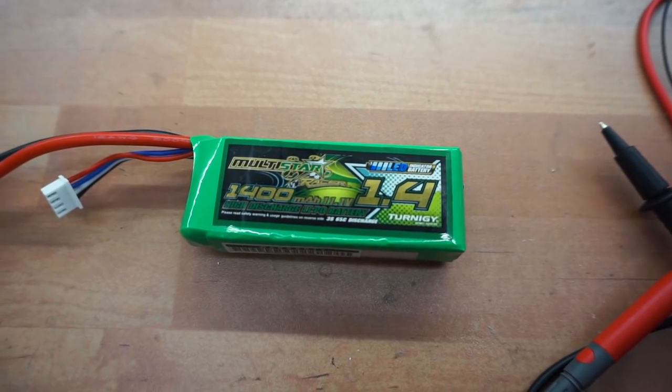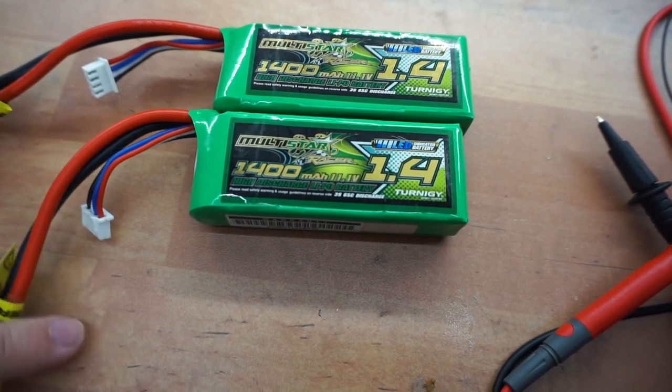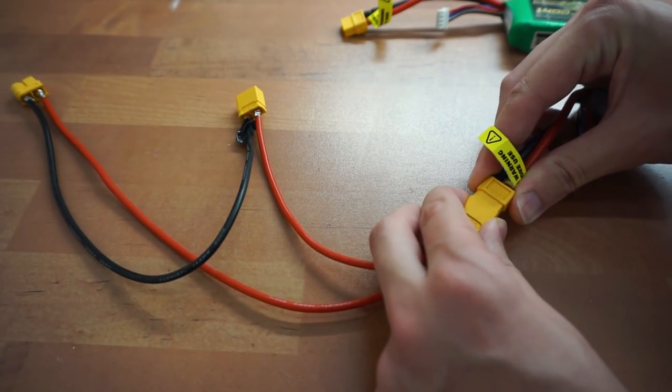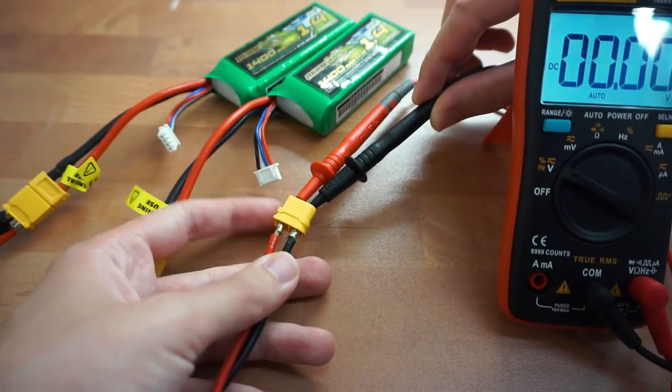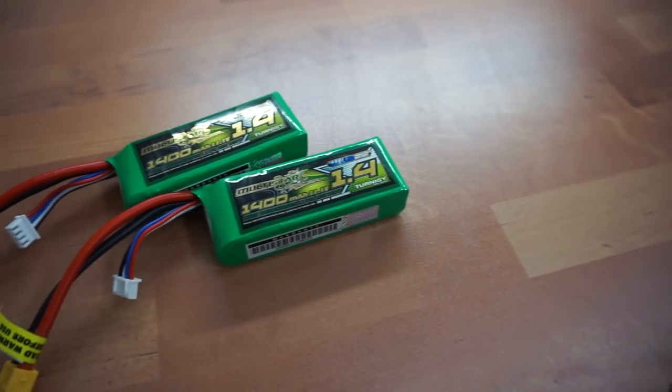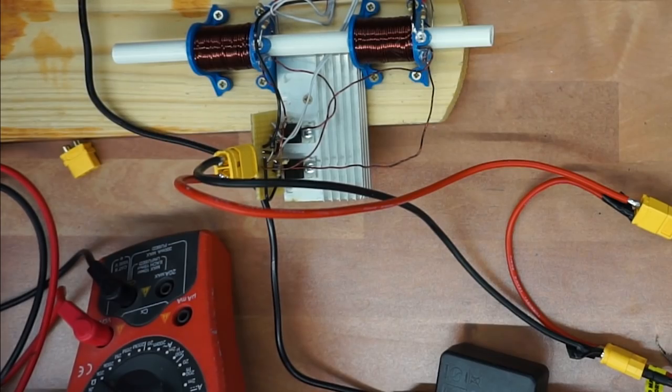Then there is the battery. Two packs of three cells, 1400 milliamp hours. These batteries are connected in series, so that's together a nominal voltage of 22.2 volts. Plenty enough, and I can always add more. But I probably shouldn't.